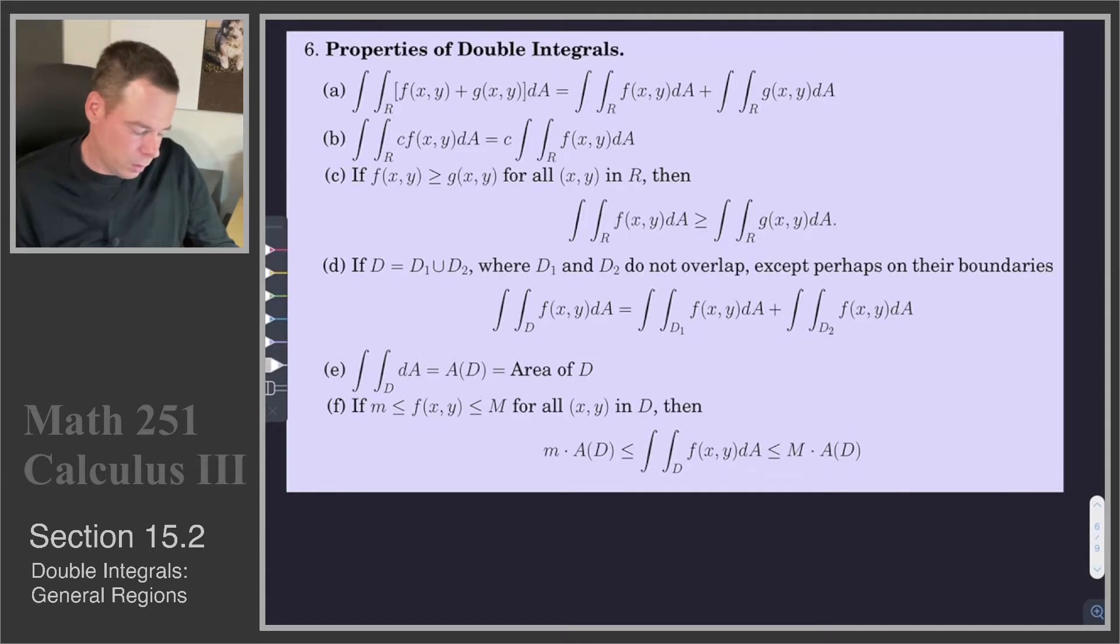So just to recall, the first property says that the integral of a sum is the sum of the integrals. The second property says that the integral of a scalar times a function is just the scalar times the integral of the function.